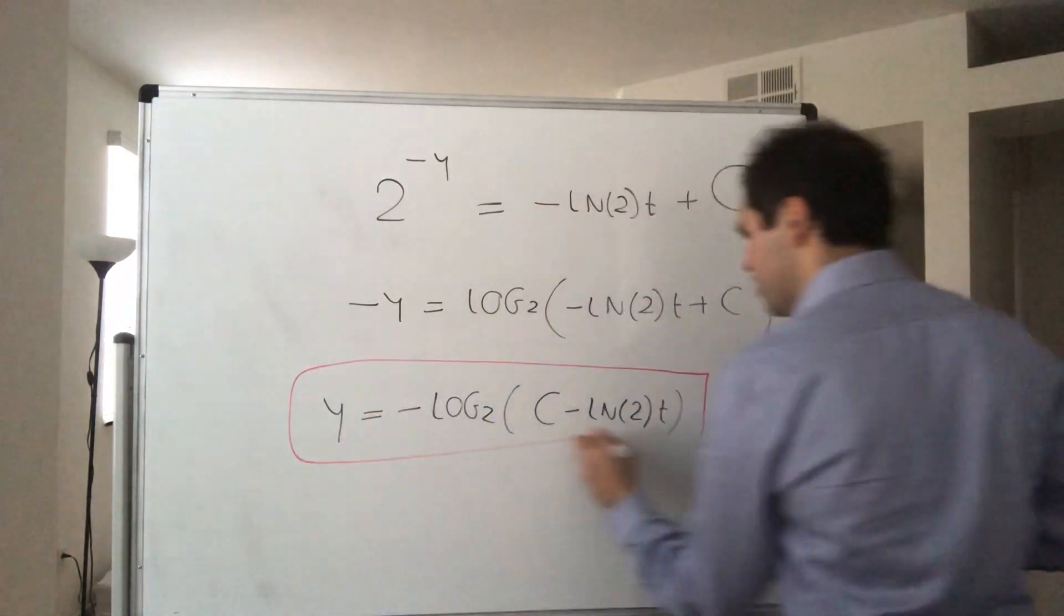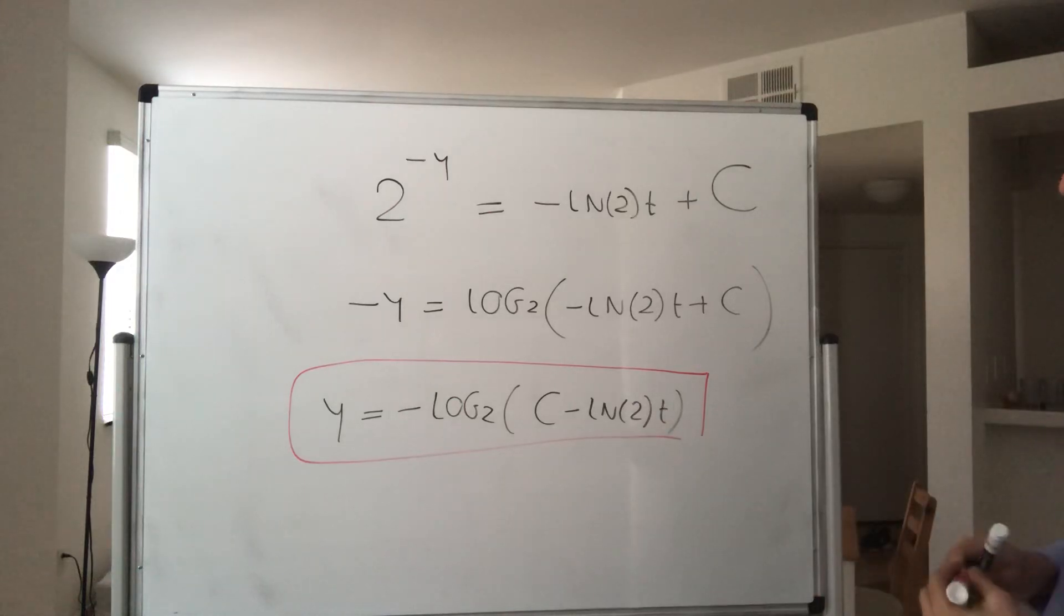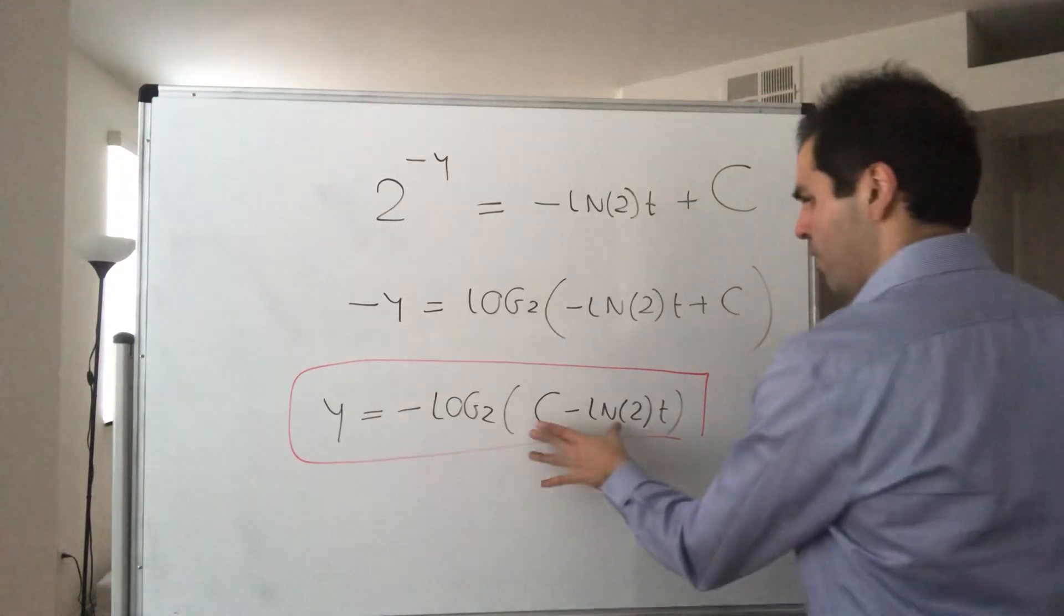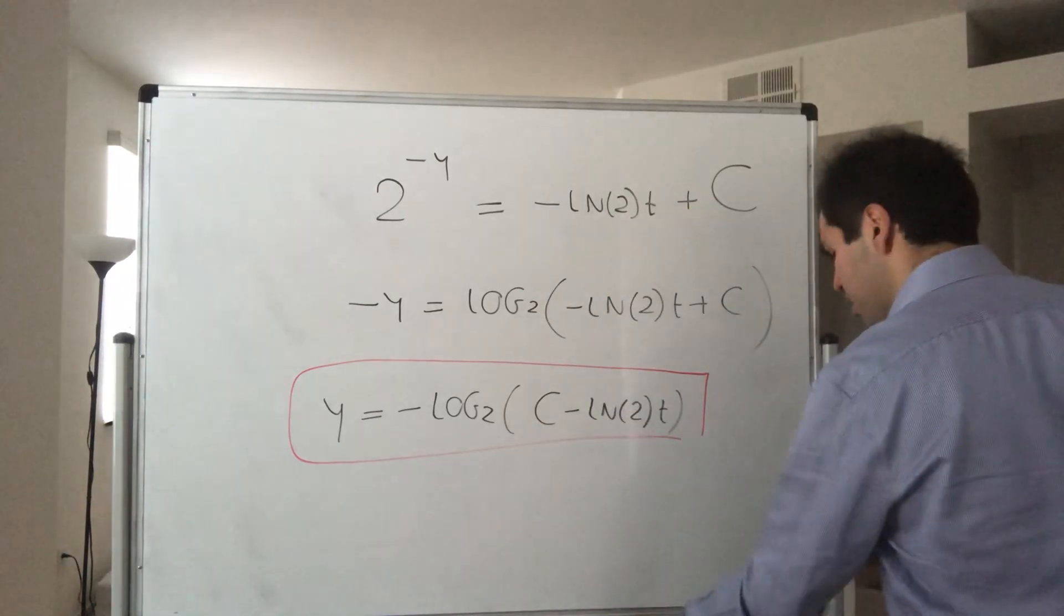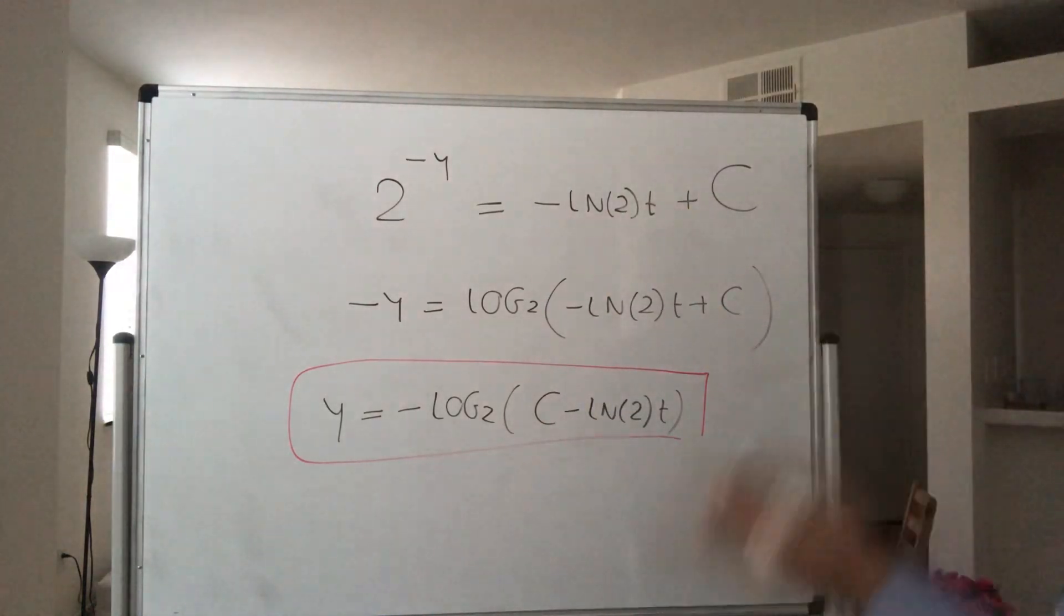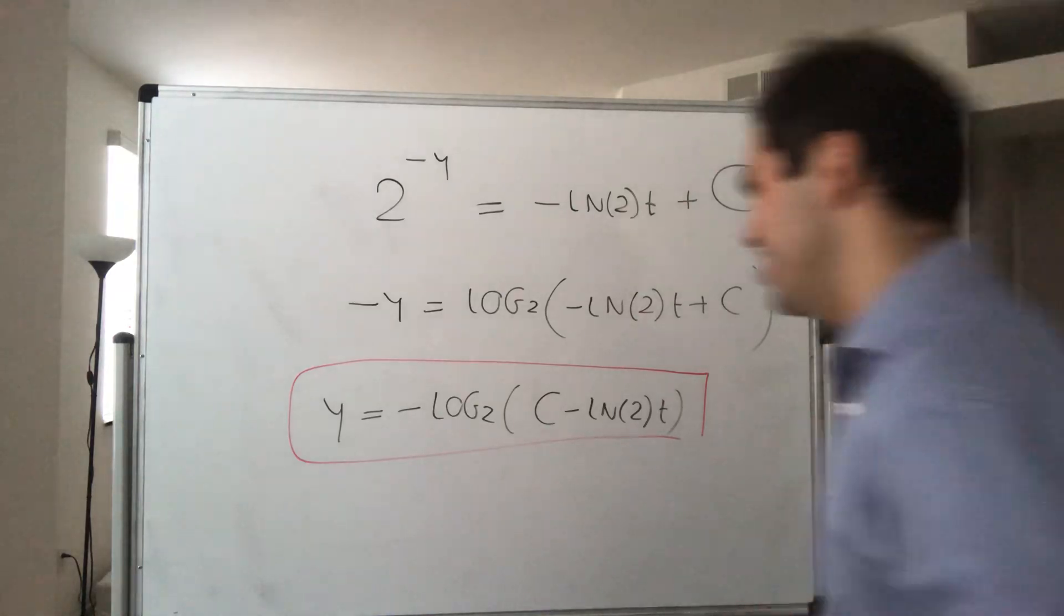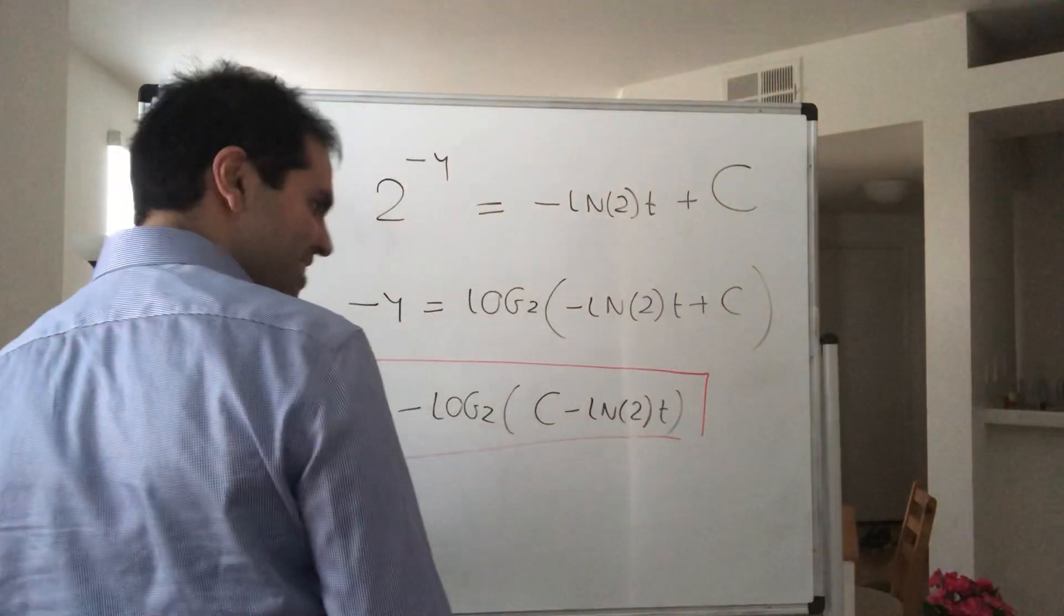The solution is pretty short-lived. If t is large enough so that the argument becomes zero, it just blows up. Let's check it by differentiation to verify.